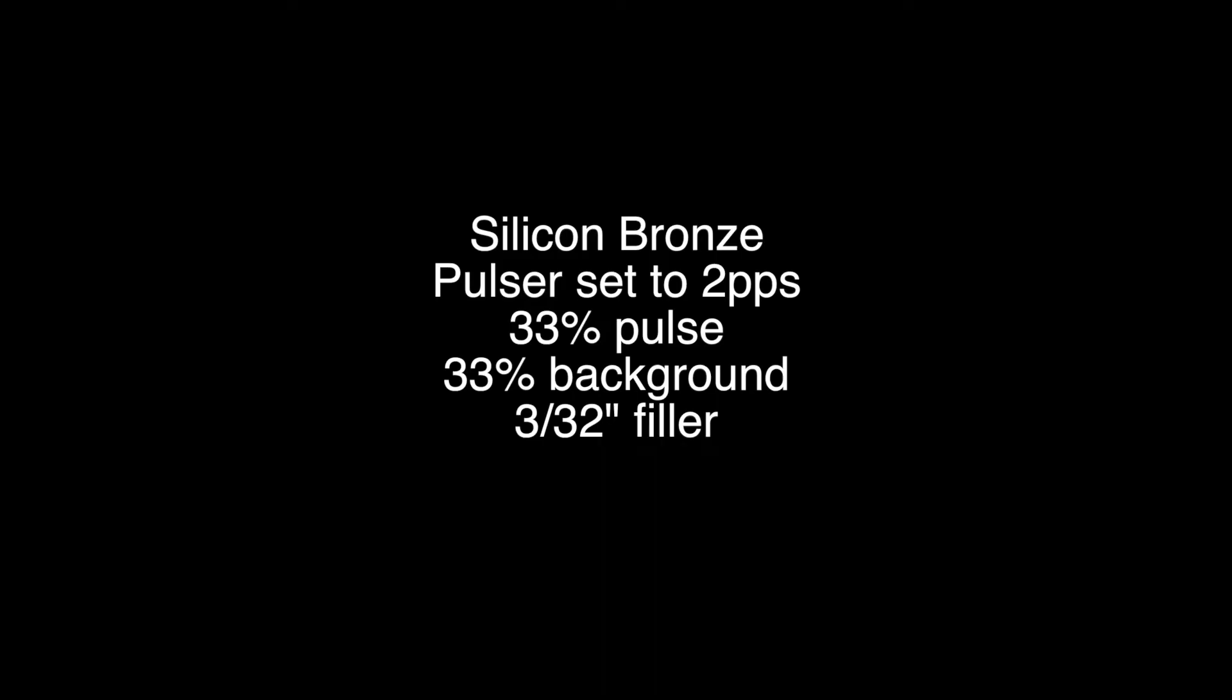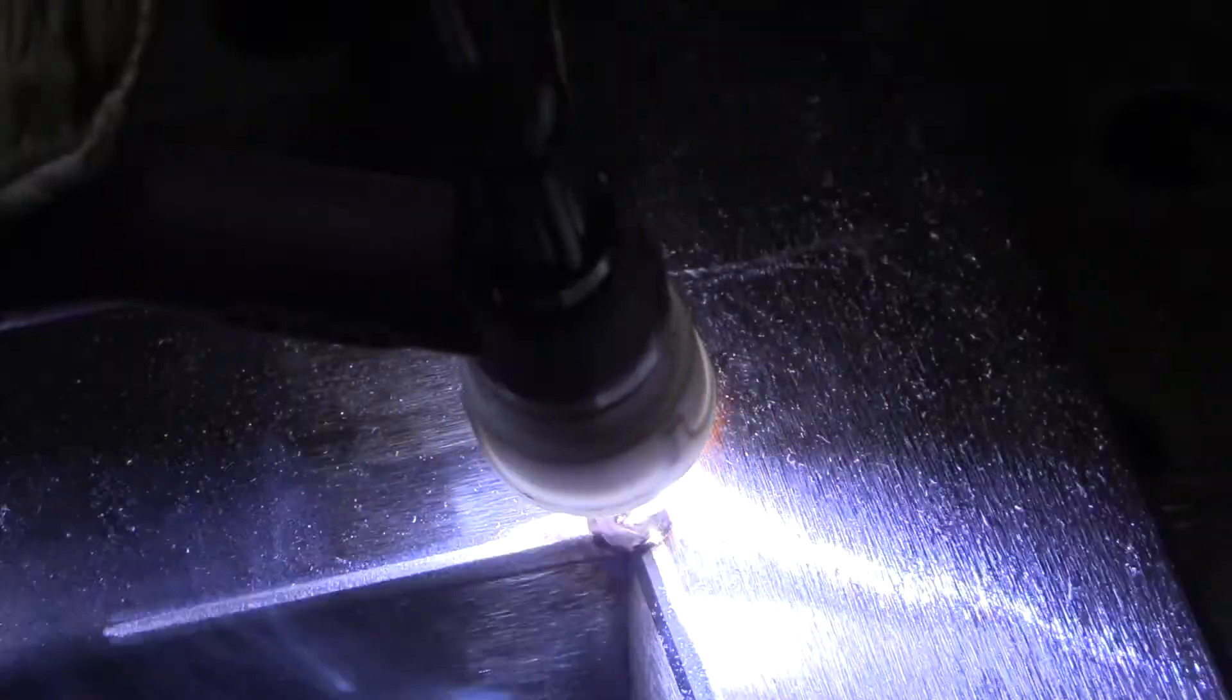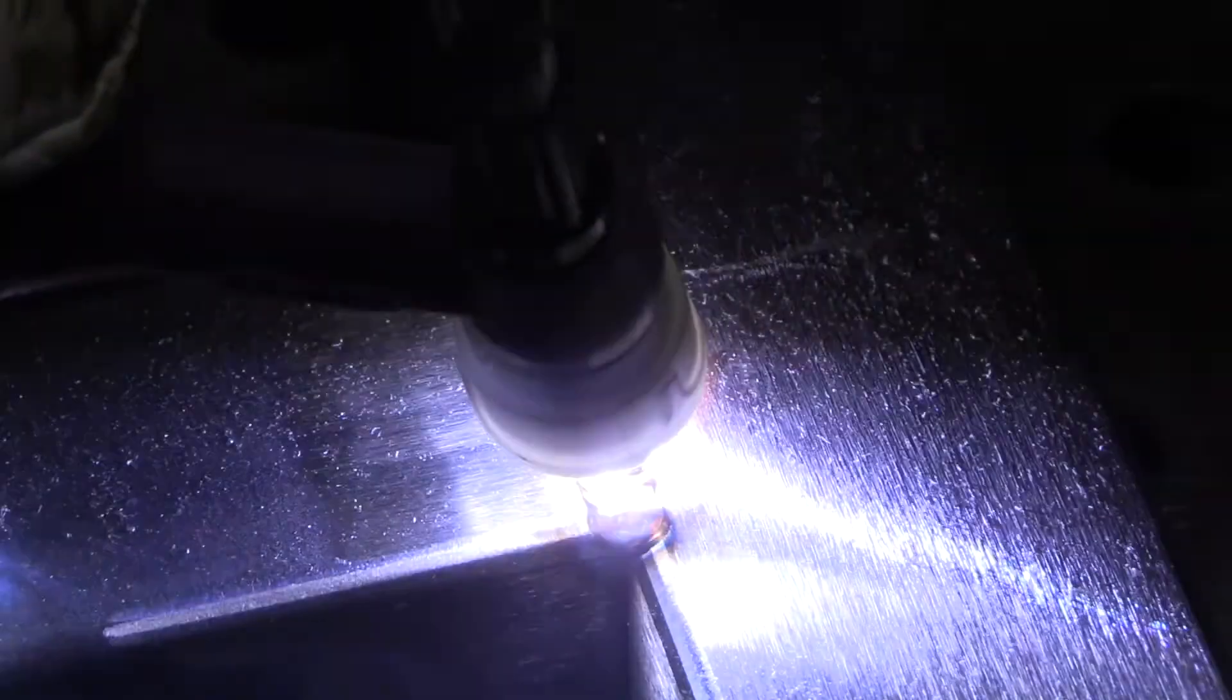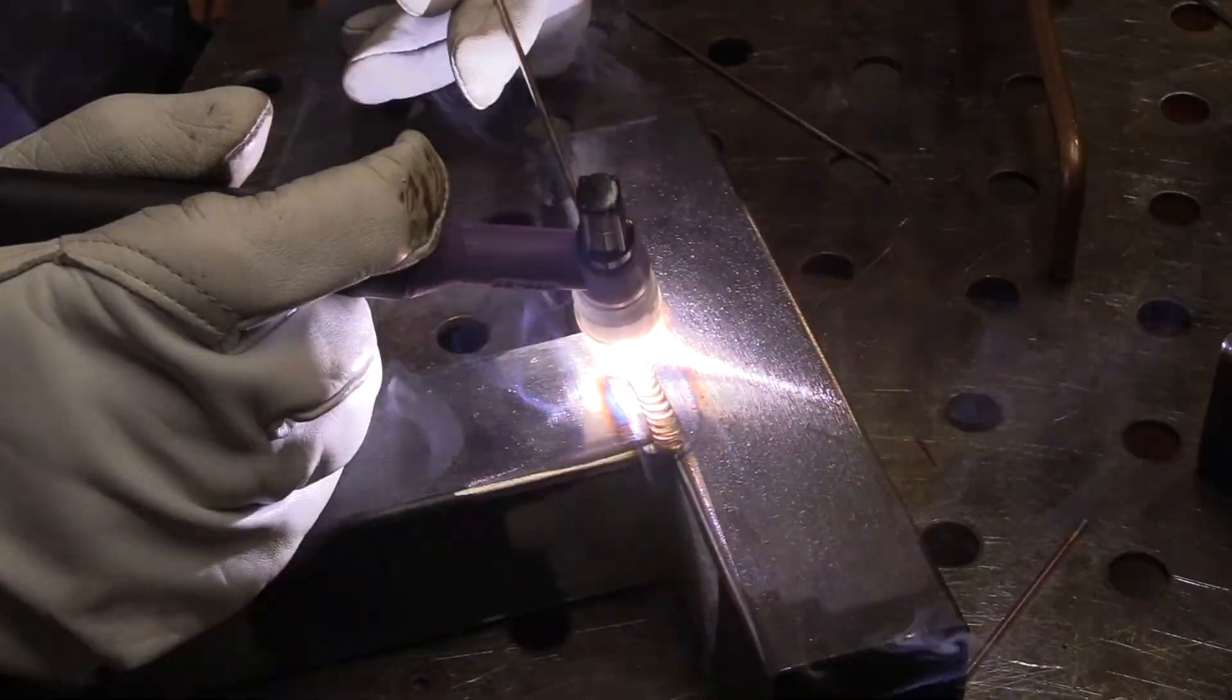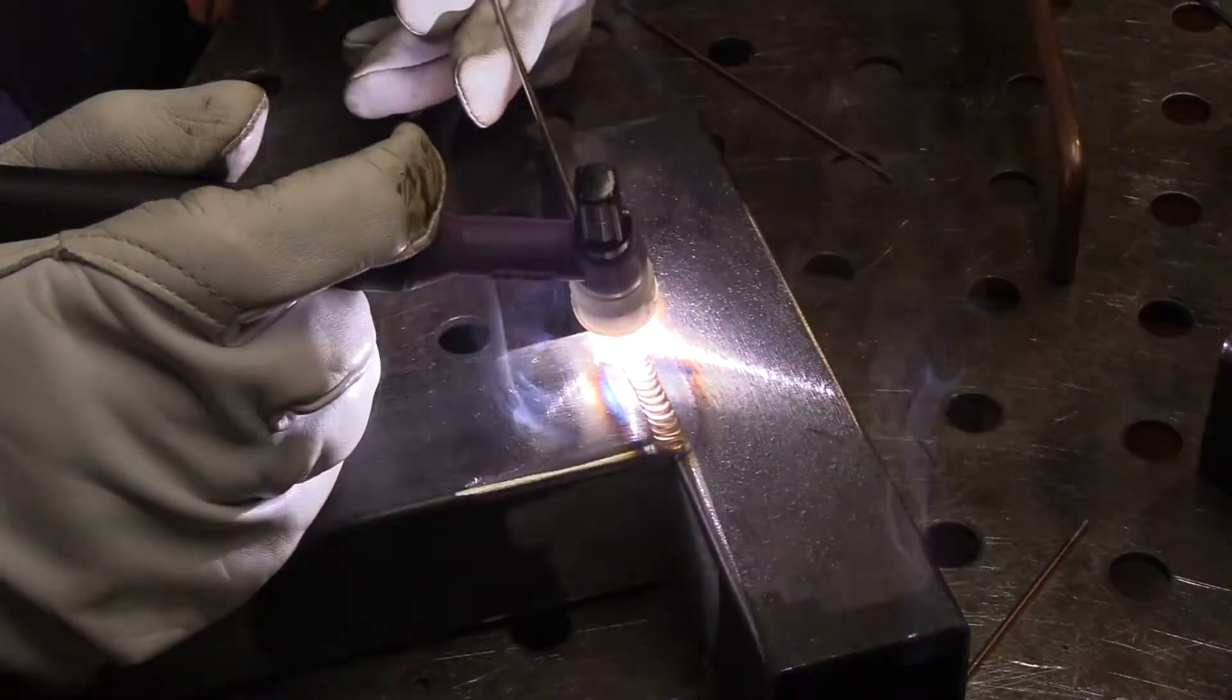Another area where it really comes in handy is TIG brazing with silicon bronze. This is some thin wall square tubing but just like with soldering or brazing the cleaner the metal the better and also what you're doing is you're shielding with argon instead of with flux so having that little bit of extra argon that the 10 cup provides makes for a nice shiny TIG braze joint.